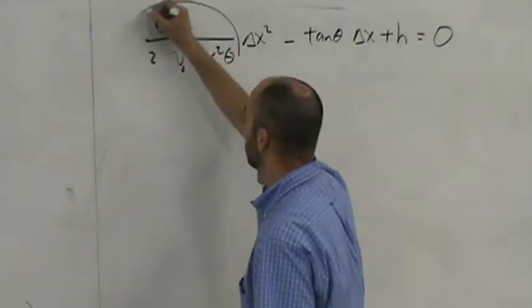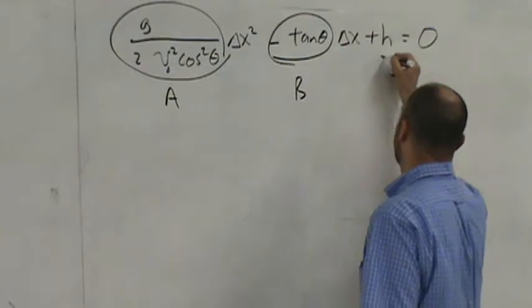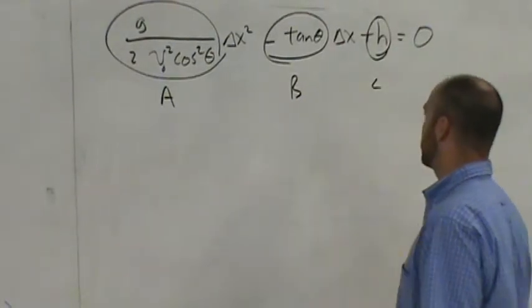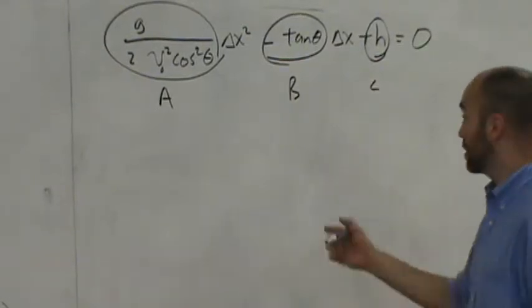So now this piece here, this is my a, this piece here, this is my b, and this piece here, this is my c. So I plug it all into the quadratic equation, just like we did last time.